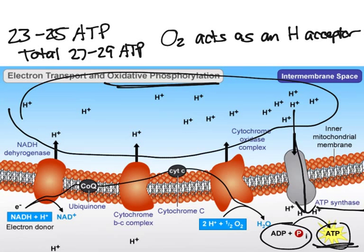Believe it or not, cellular respiration is actually 29% efficient. Some people might think that's pretty crappy, but most household appliances are only 2–3% efficient. So we actually have a very efficient way of making energy without giving off as much wasted energy as heat.